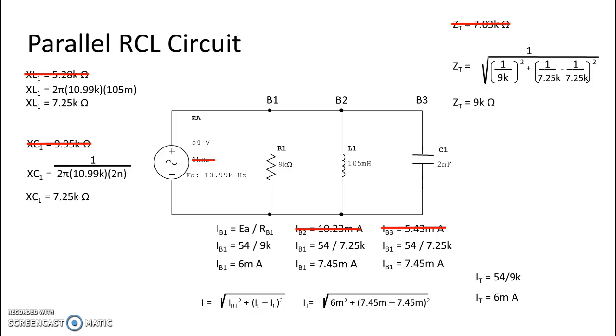All right. And then, of course, we know that those voltages are all the same. So that 54 volts will be seen on R1, L1, and C1.